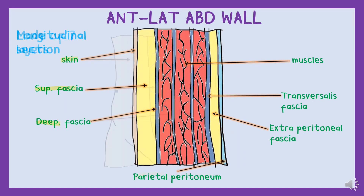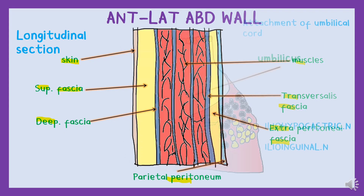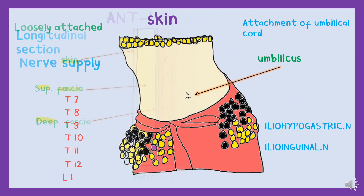Have a look at this simple diagram. From outer layer to the inner layer, we have: skin, superficial fascia, the fascia, the three muscles, transversalis fascia, the extraperitoneal fat, and the peritoneum. Let us start with the skin of this exotic belly dancer.